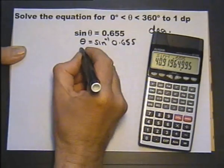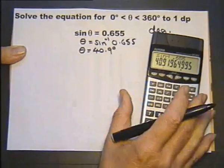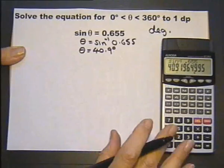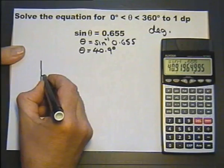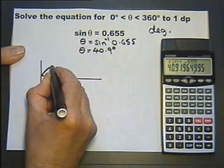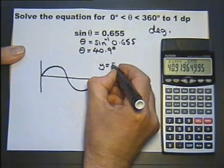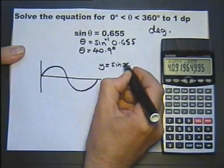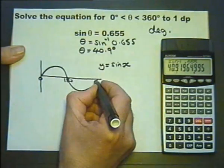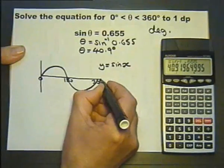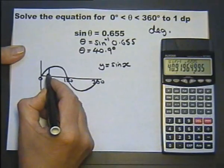So theta is 40.9 degrees, but that's only one of two possible answers. As we've said before, you can either do it by learning some formulas or just by producing a quick sketch of the graph required. In this case it's a sine graph. This is 0 and this is 180 degrees and this is 360 degrees.